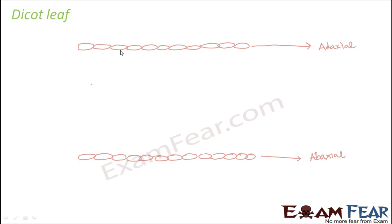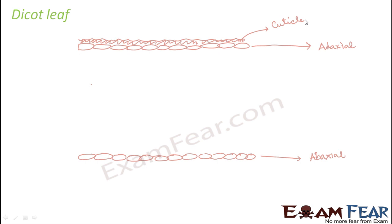Even above the epidermis, there is a waxy layer present known as cuticle. The purpose of this waxy layer is to prevent dehydration — because if too much water is lost from the leaf to the environment, it will become very difficult. It is also seen that the thickness of this cuticle decreases as we go down; it is maximum at the topmost surface of the leaf.